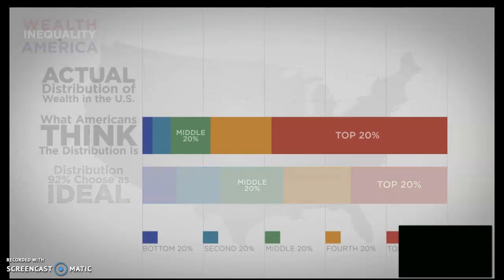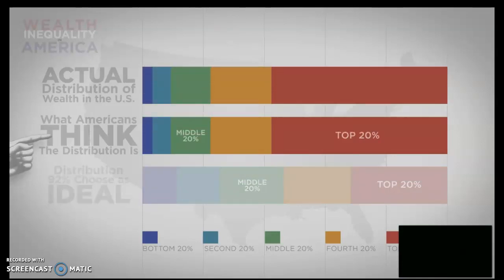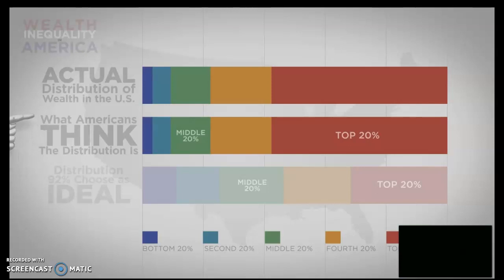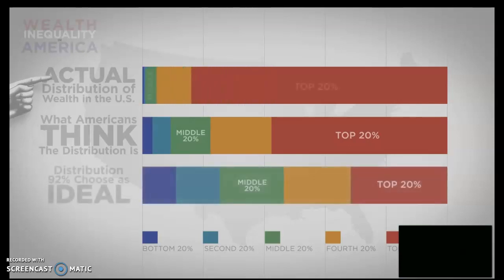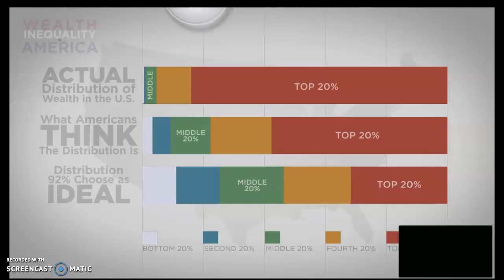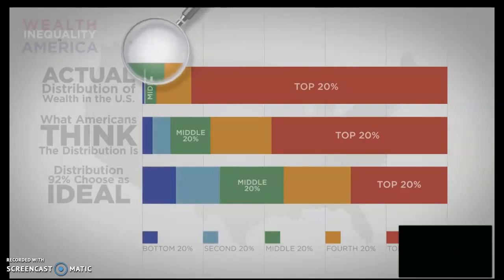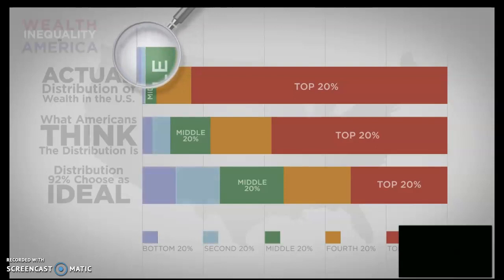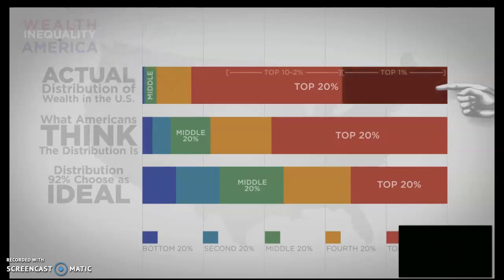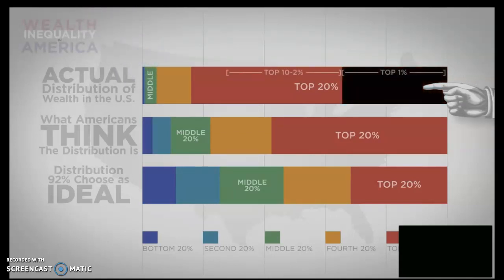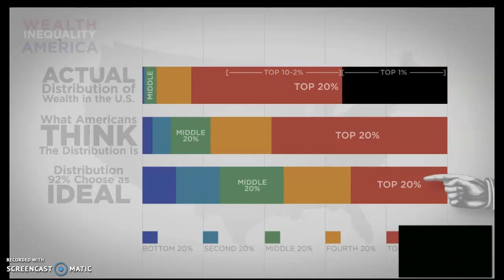Here's what we think the distribution is — and here is the actual distribution: shockingly skewed. Not only do the bottom 40% of Americans barely have any wealth — it's hard to even see them on the chart — but the top 1% has more of the country's wealth than nine out of ten Americans believe the entire top 20% should have. Mind-blowing.